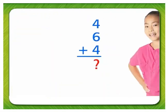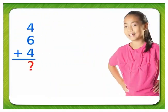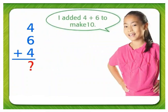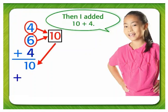Here's another way to group the addends. First, add 4 plus 6. Now add 10 plus 4.